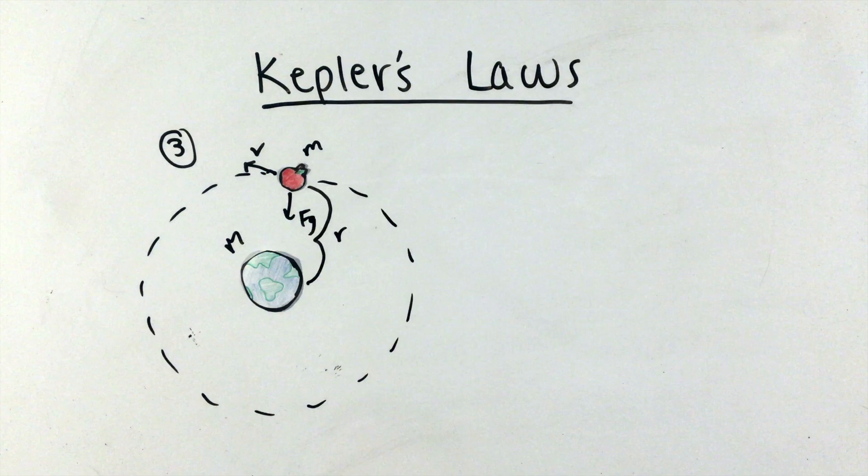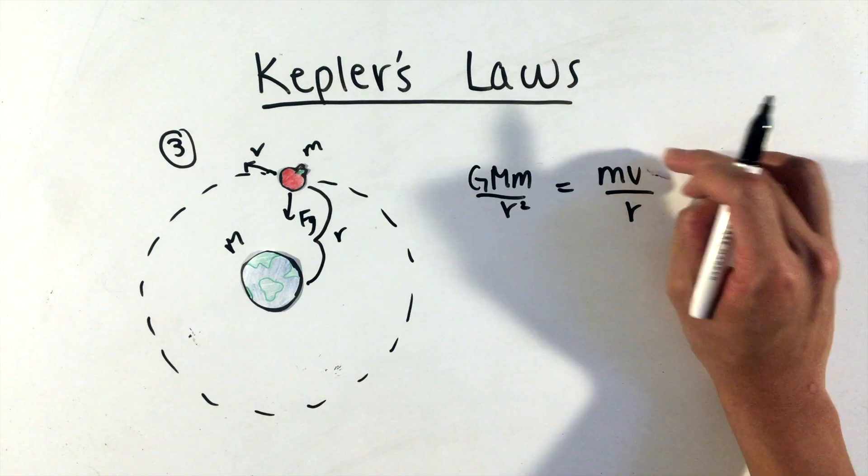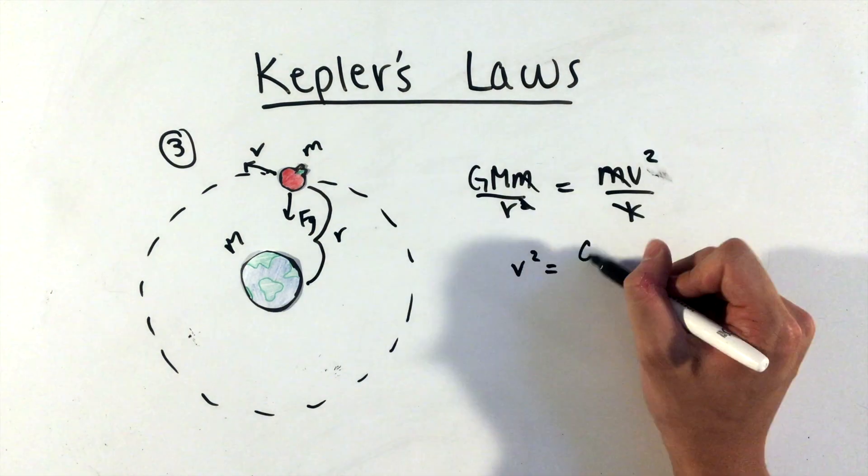Assuming these masses and lengths, and realizing that the centripetal force causing the circular orbit of this planet is provided by the gravitational force, we can equate the two quantities.